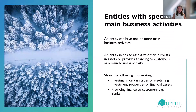Entities with specified main business activities is another element of IFRS 18. Entities can have one or more main business activity, and if that activity would normally be classified as financing or investing, it needs to be moved into the operating section if it is truly the main business activity. For example, if investing in investment properties is the entity's business, those items are operating. Similarly, a bank providing finance to customers would classify that activity as operating.